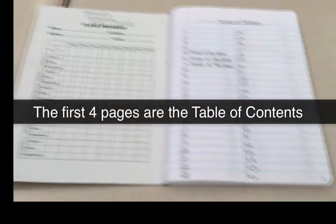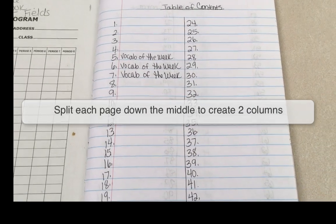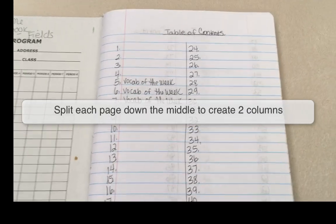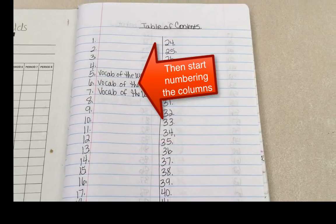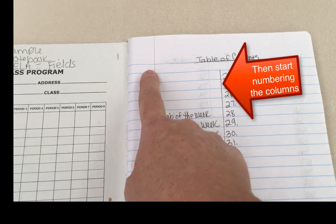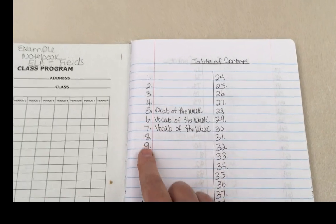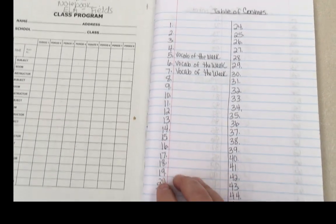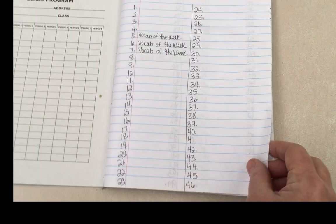The first four pages are labeled table of contents and then they are split in half with a line going down the center using a straight edge. And then you're starting numbering here. I could have actually started numbering right here, which doesn't really matter, but as long as you have your table of contents going all the way on both sides.